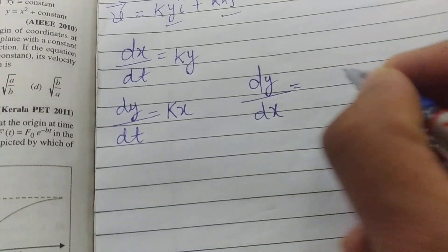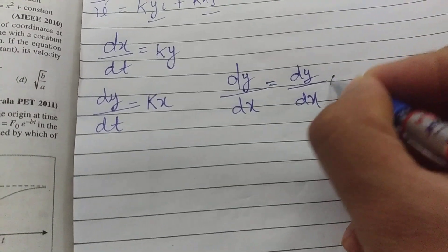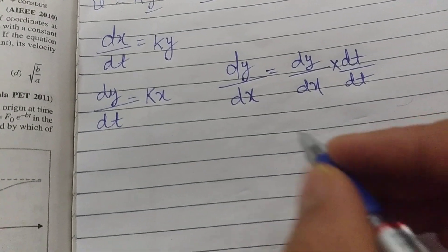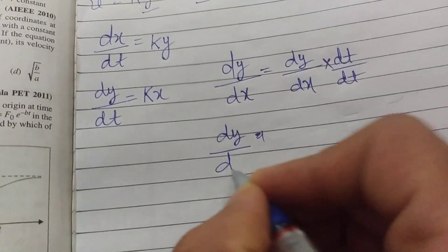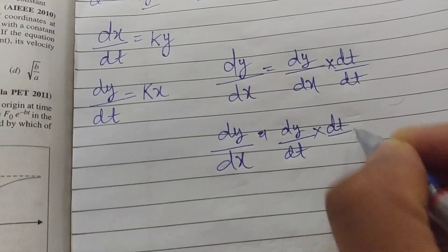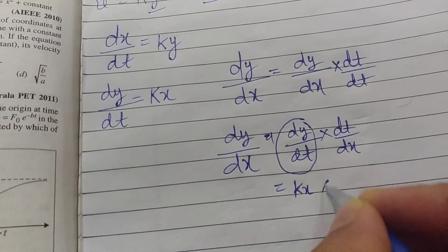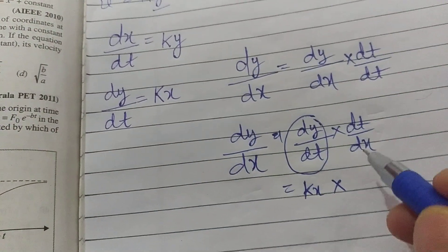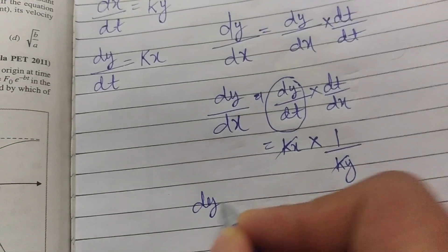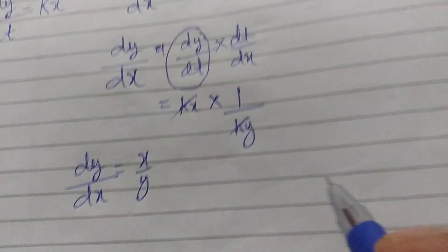I write dy by dx as dy by dx times dt by dt. I simply multiply the equation with dt divided by dt. So dy by dx equals dy by dt multiplied by dt by dx. We have dy by dt equals kx, and dx by dt equals ky. So dt by dx is 1 upon ky. k and k cancel, so dy upon dx equals x upon y.